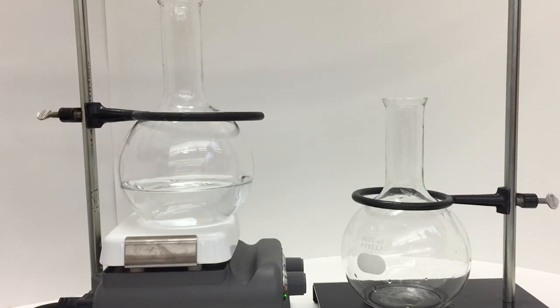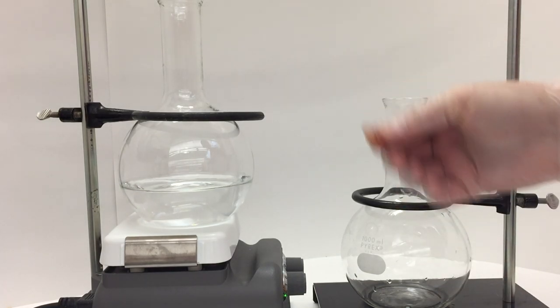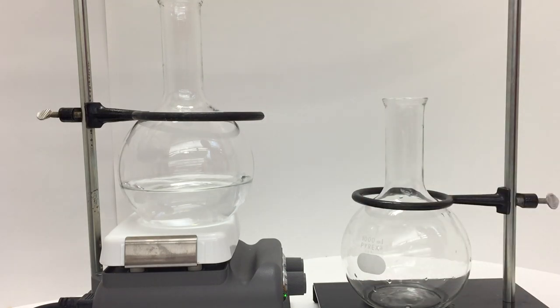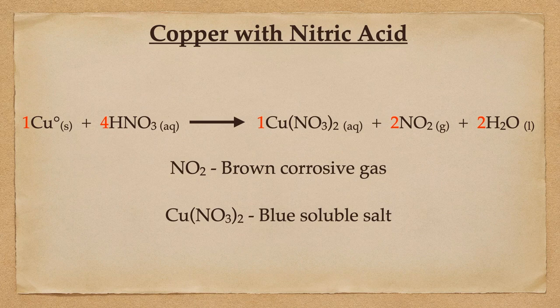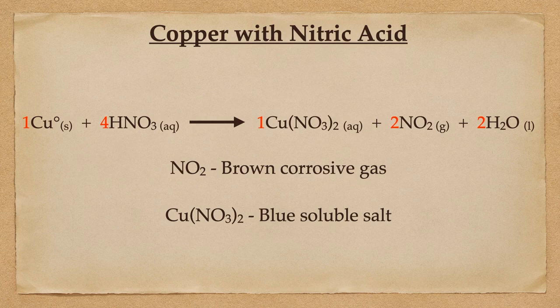Today we're going to react some concentrated nitric acid with some copper pennies - I have a Canadian penny and a eurocent - and demonstrate that the brown nitrogen dioxide gas that is given off is very corrosive and in fact very acidic itself.